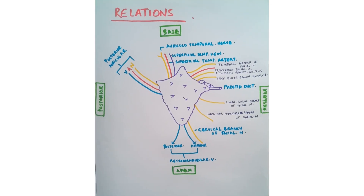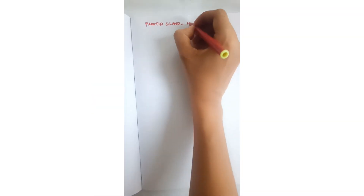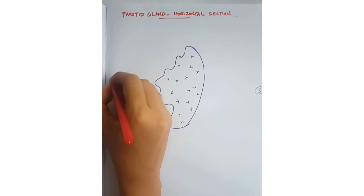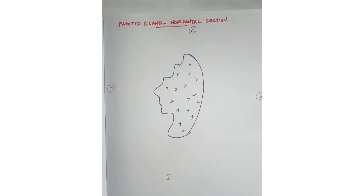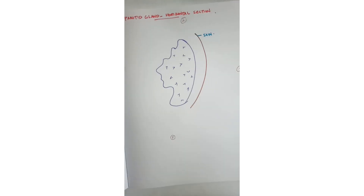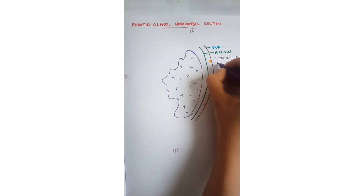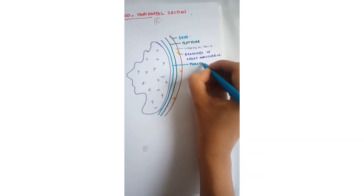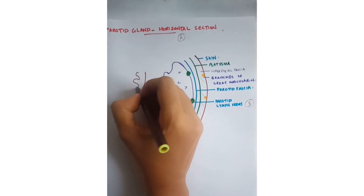For the remaining structures, let's draw a horizontal section of the parotid gland, showing the superficial surface, medial border, anterior border, and posterior border. On the superficial surface: skin, then superficial fascia which includes platysma and the greater auricular nerve, then parotid fascia, and then the deep parotid lymph node embedded in the gland. On the medial side there is the wall of pharynx.